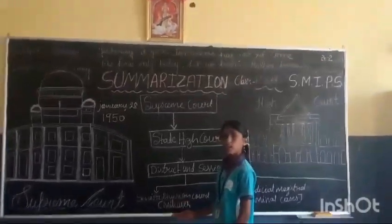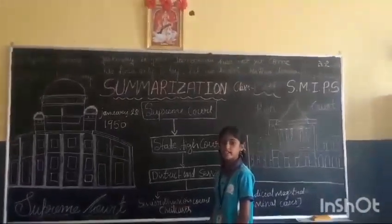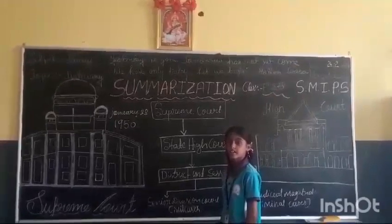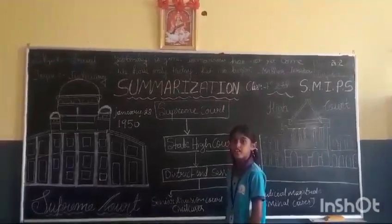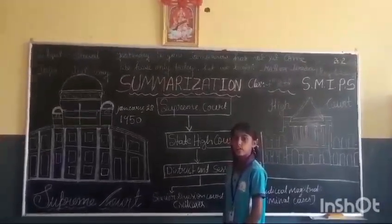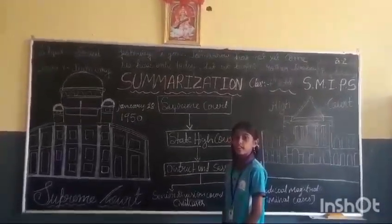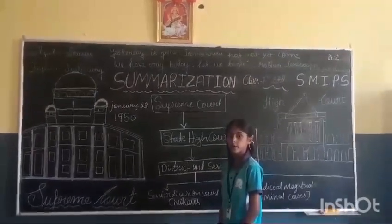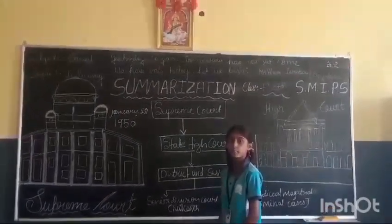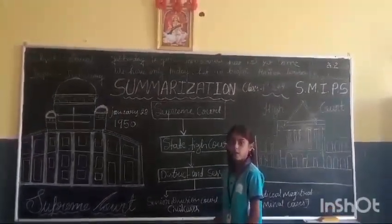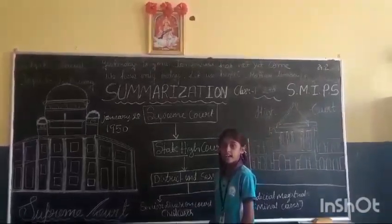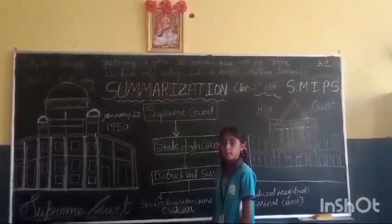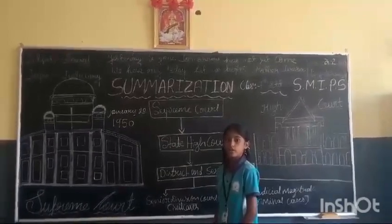Every district has a civil court with its chief judge. The Governor appoints the chief judge in consultation with the judge of the High Court. The civil court settles disputes related to civil matters like divorce, marriage, monetary transactions, and others. There are also appeals from the lower courts.